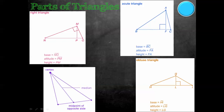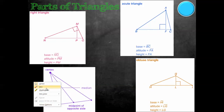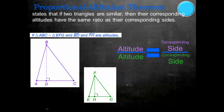Another term we also have to remember is the median. The median is not necessarily the height. It's the line that goes from the vertex to the midpoint of the opposite side, so we can't always say that it's the height.